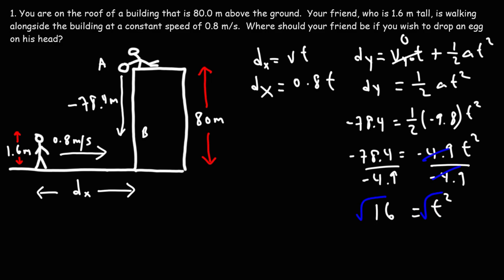So now, we've got to take the square root of both sides. And we get t is equal to 4 seconds. So it's going to take 4 seconds for the egg to drop from position A to position B.